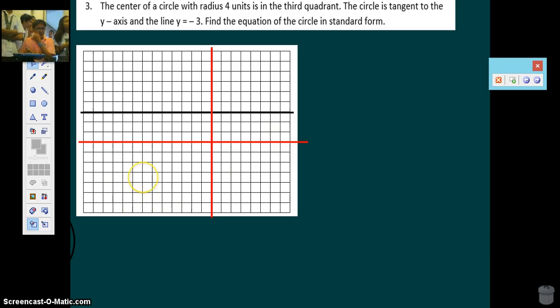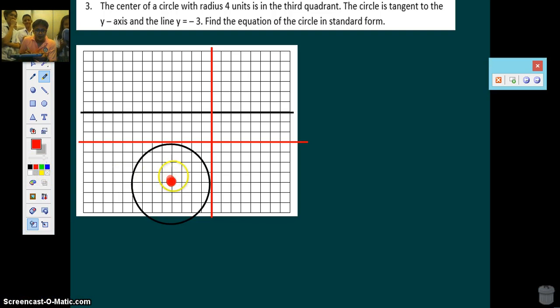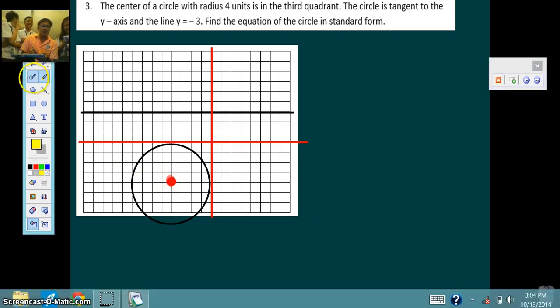Finding the circle's standard form. So where do you think the circle is? The circle is in the third quadrant. So here, I prepared a circle. It should be tangent to both the y-axis and the line y equals negative 3. So it should be here. You can pretty much easily locate the center. And the center is here. That's the center.